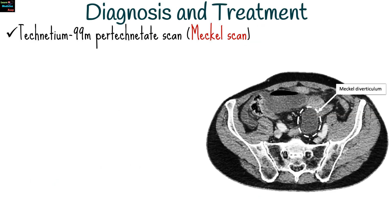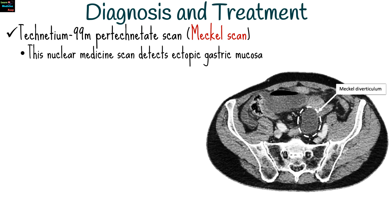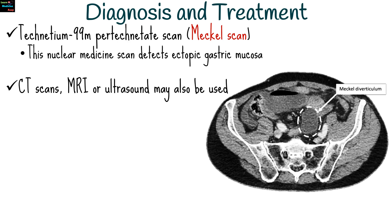Diagnosis can be challenging due to the nonspecific nature of symptoms. Techniques used for diagnosis include the technetium-99m pertechnetate scan, also known as Meckel's scan, which is a nuclear medicine scan that detects ectopic gastric mucosa. CT scans, MRI, or ultrasound may also be used.